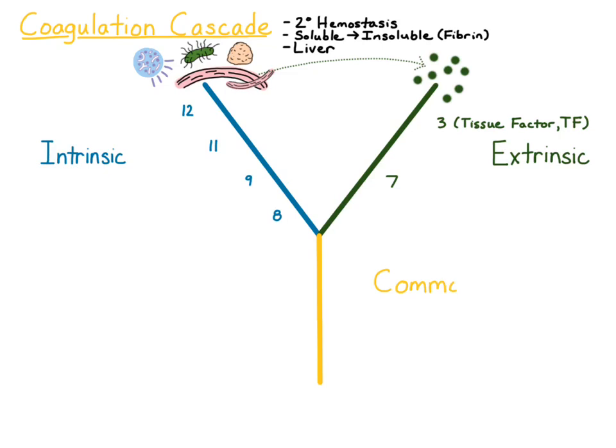The third pathway is the common pathway. It consists of factors 10, 5, 2, and 1. Factor 2 is more commonly known as thrombin, and factor 1 is more commonly known as fibrinogen. Thrombin is the last molecule within the coagulation cascade that actually converts fibrinogen to fibrin. So thrombin cleaves fibrinogen, which is that soluble molecule, into fibrin, which is insoluble and contributes to clot formation.